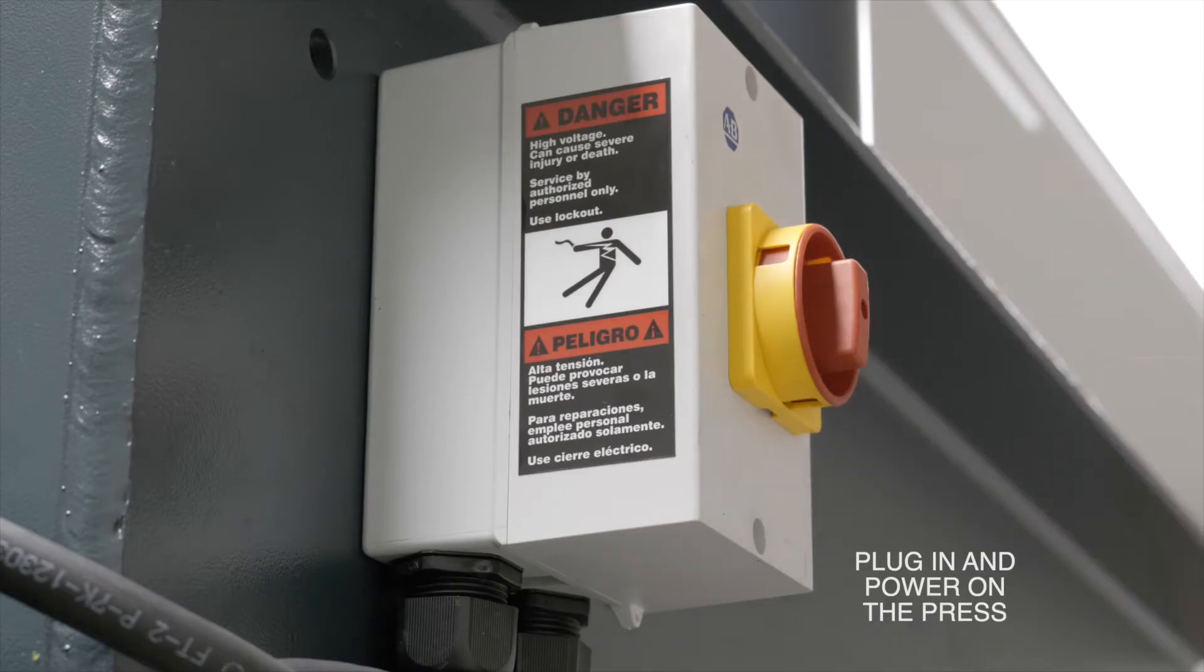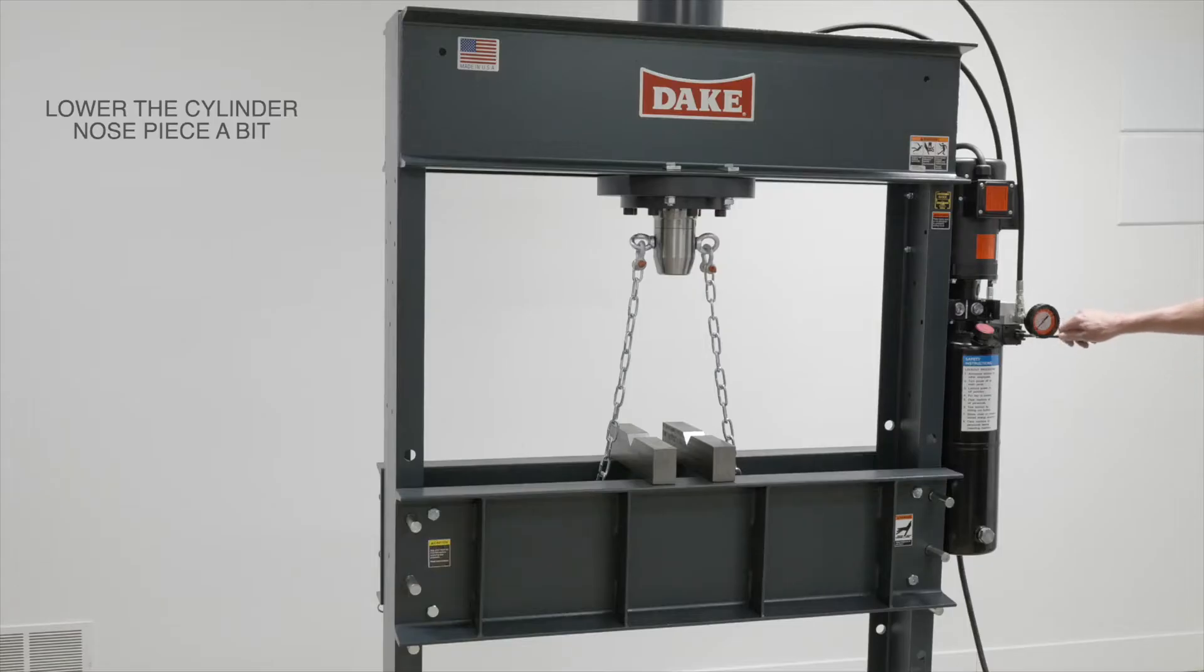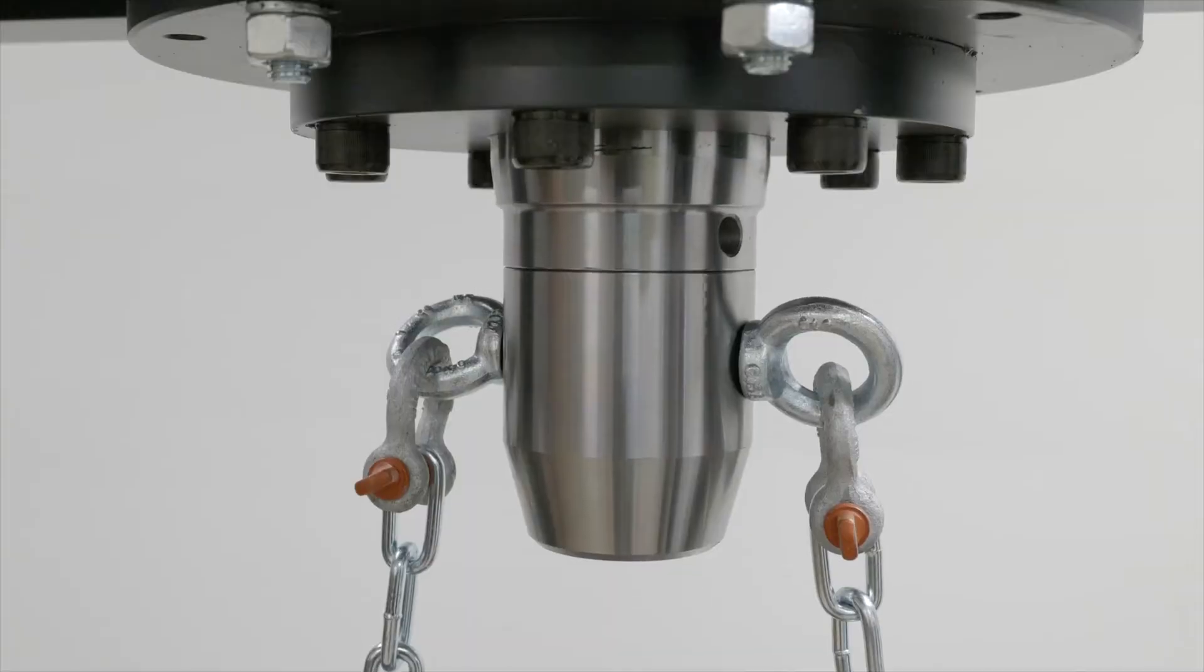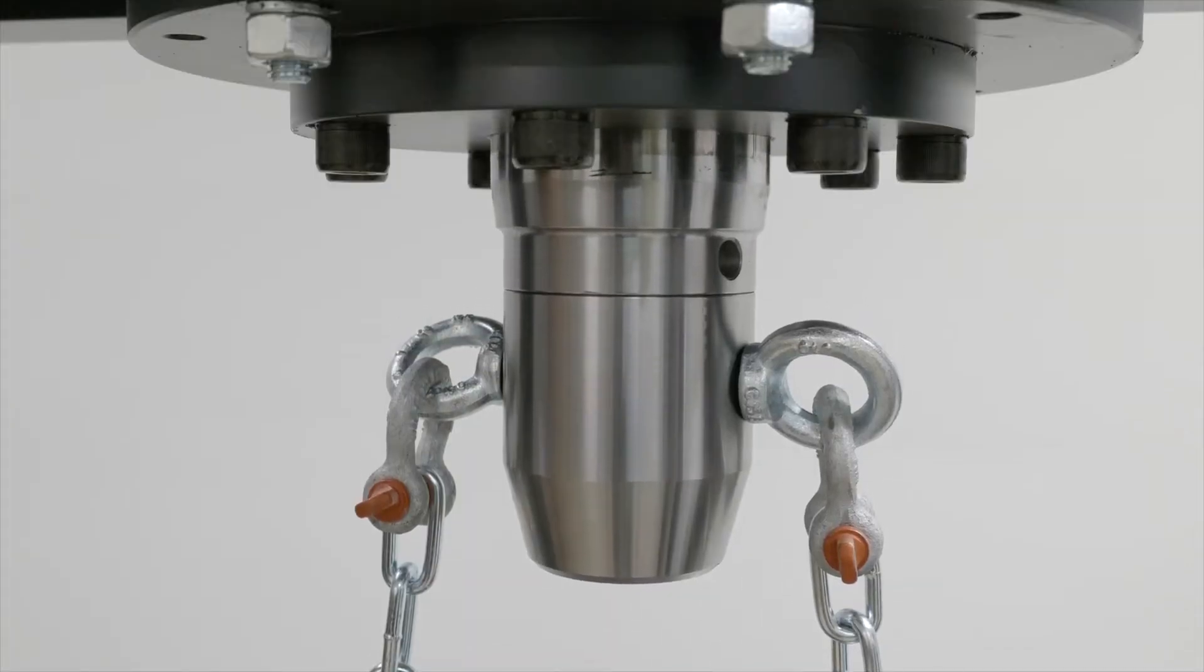Now we can plug in and power on the press and lower the cylinder nose piece a bit, just enough to give us a little slack to loosen up those chains.